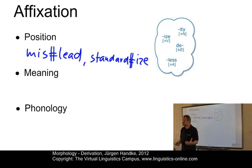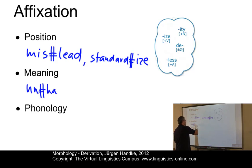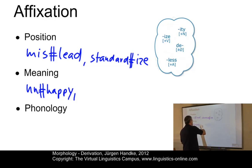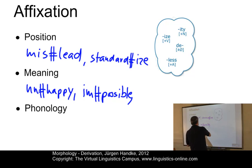On the other hand, we can group affixes concerning their meaning. Let's look at negative affixes as an example. For example, we can have something like 'unhappy.' Other realizations of negative prefixation are things like 'impossible,' and you might want to group things like 'non-syntactic' here as well.